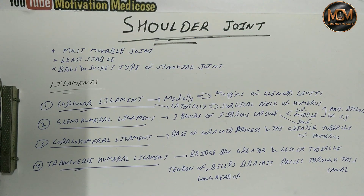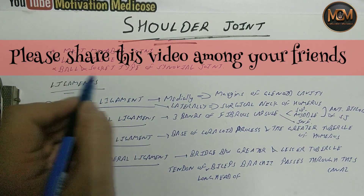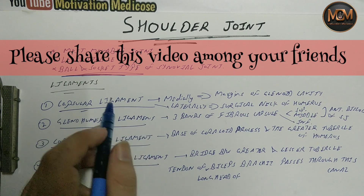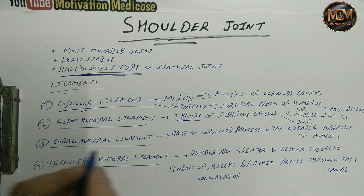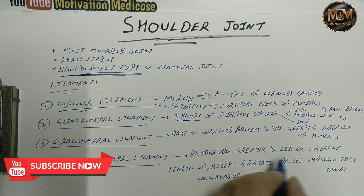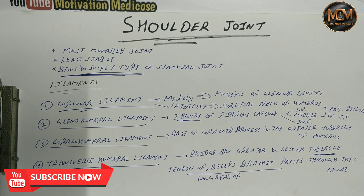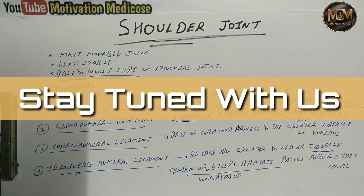To summarize: the shoulder joint is the most movable and least stable joint, and is a ball and socket type of synovial joint. We studied four ligaments: the capsular ligament covering the joint like a capsule, the glenohumeral ligament with three bands, the coracohumeral ligament between the coracoid process and humerus, and the transverse humeral ligament forming a canal between the two tubercles through which the tendon of biceps brachii passes. In the next video we'll continue studying the shoulder joint — please like, share, subscribe, and press the bell icon. Thank you!